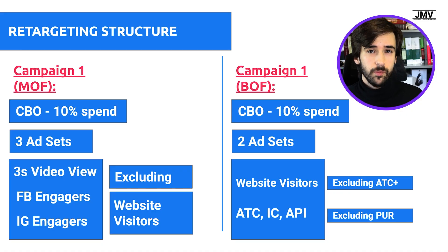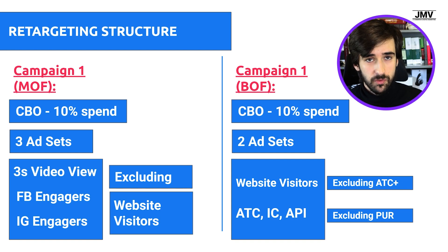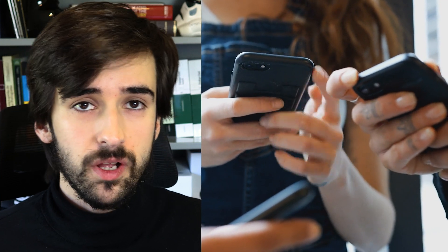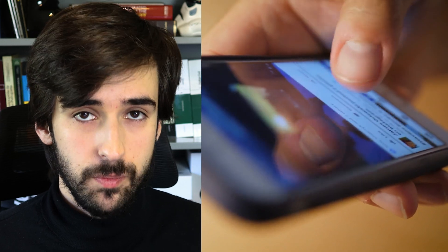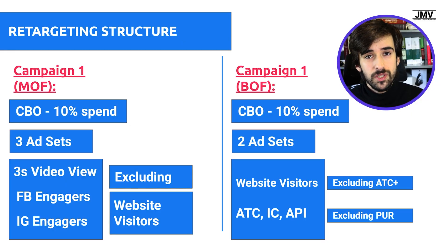Here's the campaign structure you want to use for your retargeting strategy: two campaigns, one for middle of funnel and one for bottom of funnel, both CBO campaigns spending 10% of your total spend for that product. This is very important — these campaigns are not prospecting for new customers; they're only showing ads to a restricted group of people who have already performed valuable actions in your funnel. You can only scale these campaigns as much as you scale your cold traffic, or else you end up showing your ads over and over to the same people.